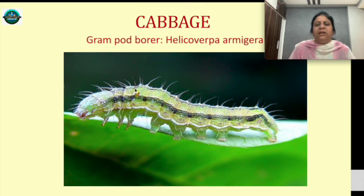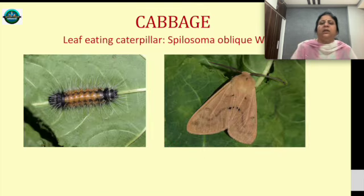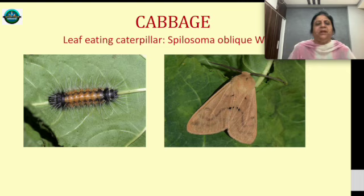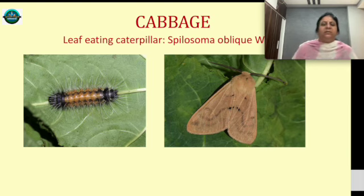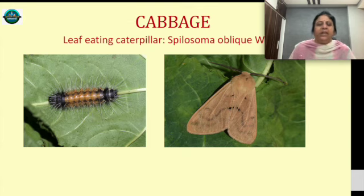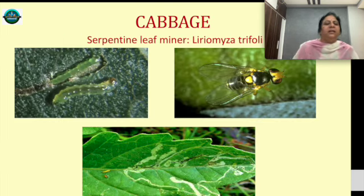Polymorphism is also a choice identification character. Leaf-eating caterpillar also attacks cabbage. Cabbage farmers should note that mustard crop is very important as a trap crop, as it attracts many kinds of insects.